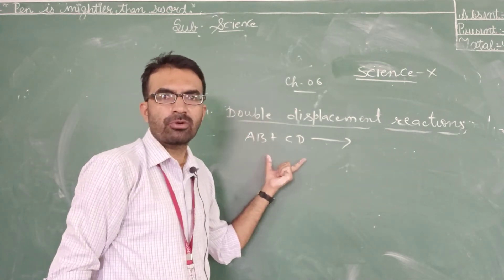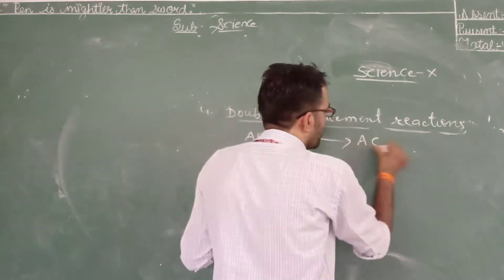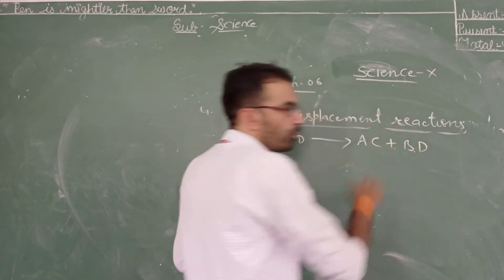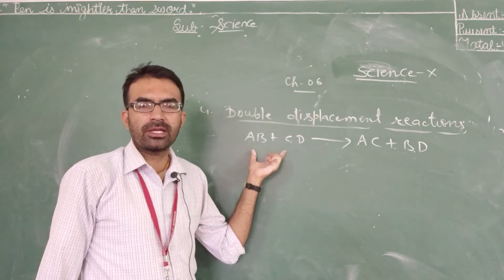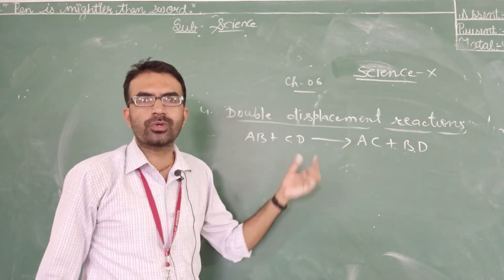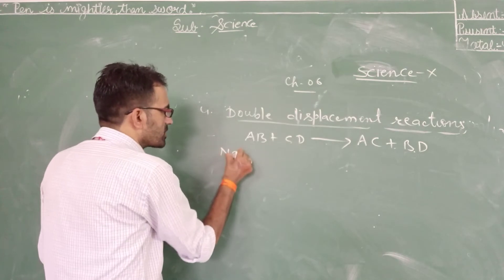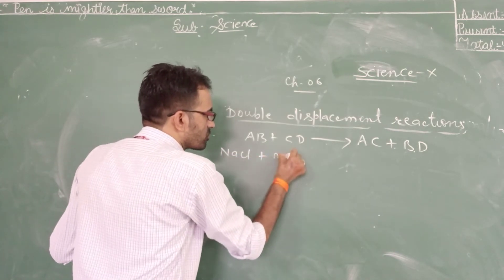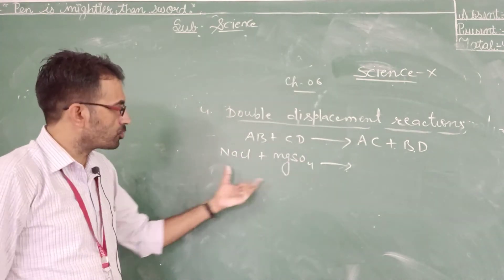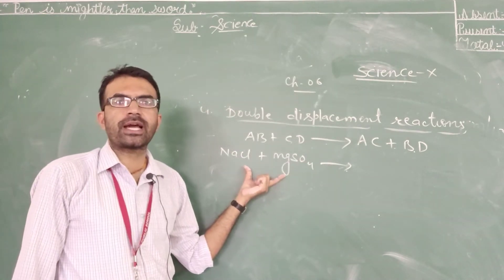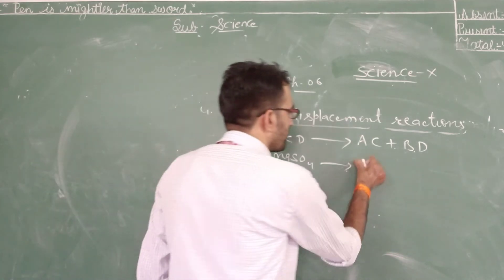In the general form AB plus CD, a mutual exchange of ions takes place between the two compounds, and the products formed are AC plus BD. The ions or groups of the compounds exchange with each other mutually.